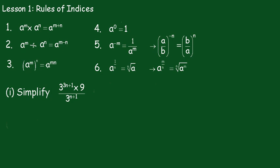a to the m raised to the n is equal to a to the mn. We multiply the indices together. a to the 0, remember, is 1.